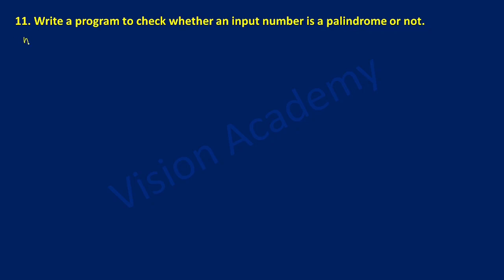Let us begin with a variable called n of type integer, and here we will ask the user to enter the number in the input statement. In double quotation marks I will ask the user to enter the number and close the brackets. Now I'm going to store this original value in another variable called a temporary variable, so temp is equal to n.